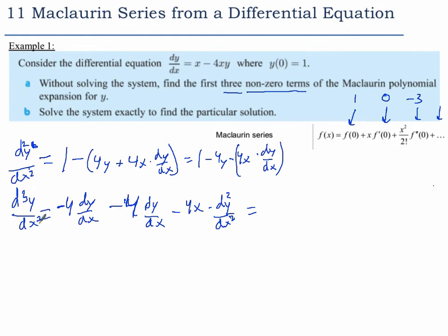This is the third derivative. Okay, this becomes negative 8 dy dx minus 4x times the second derivative.